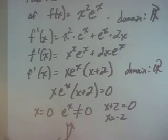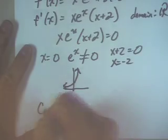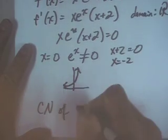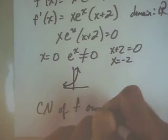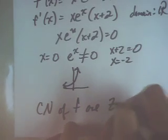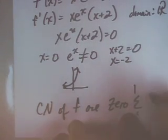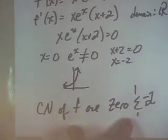We call them zeros or roots sometimes. So, those two numbers are the critical numbers of f. The critical numbers of f are zero and negative 2.